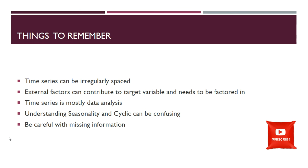To summarize the distinction: seasonality is seeing the same behavior or pattern at the same period over time, whereas cyclic behavior is completely dependent on business or economic cycles. When doing time series work, the majority of the time you spend is on data analysis — the more time you invest in data analysis, the simpler you can keep your model. These are the key things to remember and I'll go into more detail in the next video.